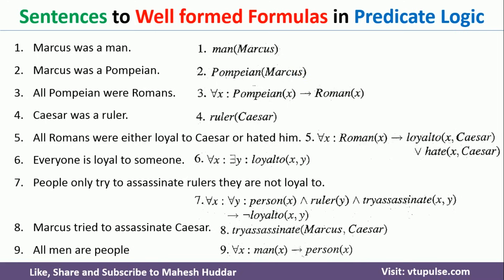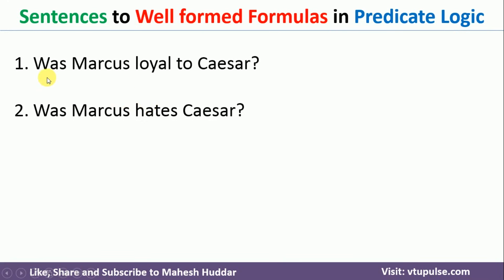In this video, I have explained only the conversion part. In the next video, we will discuss how we can prove some of these inferences — like was Marcus loyal to Caesar, and was Marcus hates Caesar. I have already solved these inferences and the link for that video is given in the description below. I hope the concept is clear — if you like the video, do like and share with your friends, press the subscribe button for more videos, and press the bell icon for regular updates. Thank you for watching.